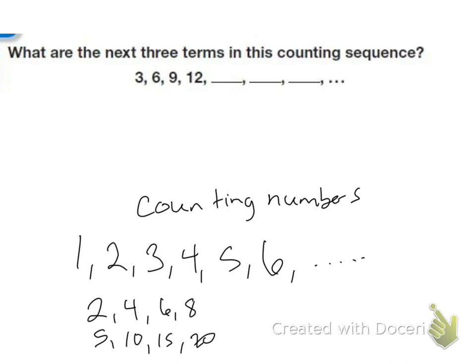An ordered list of numbers forms a sequence. Each member of a sequence is called a term, so these are all terms. We can study a sequence to discover its counting pattern or rule, and the rule can be used to find more terms in the sequence.